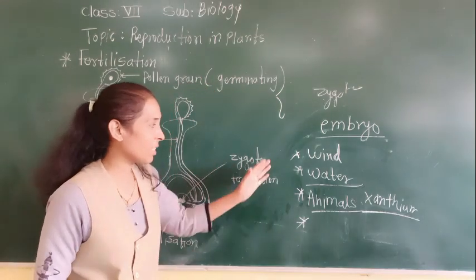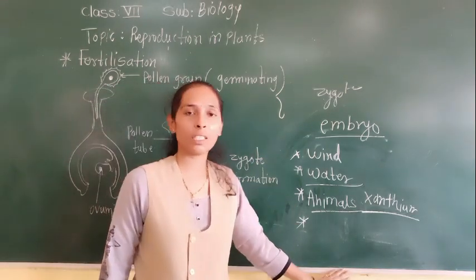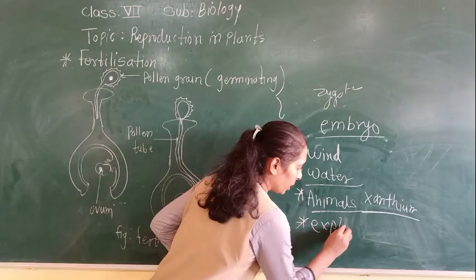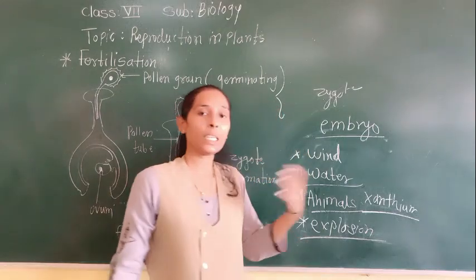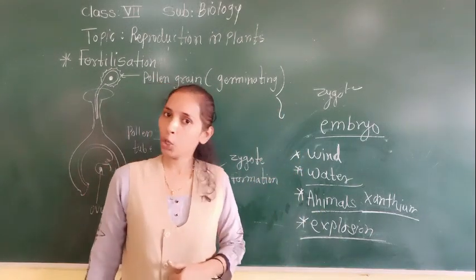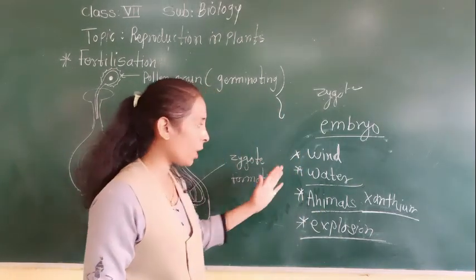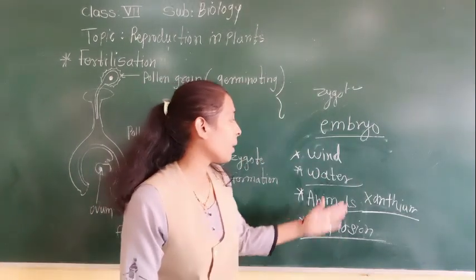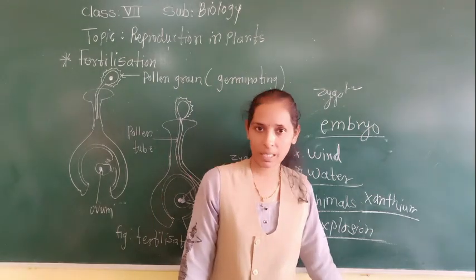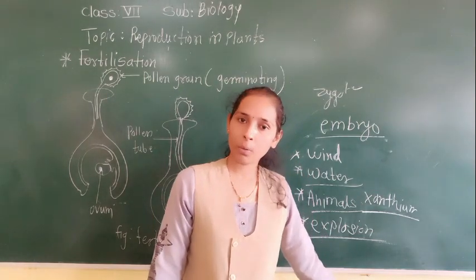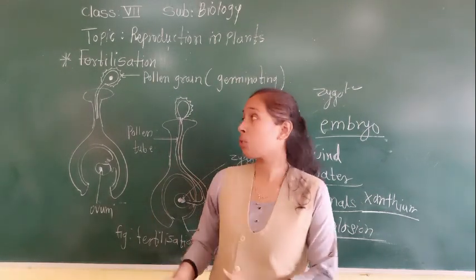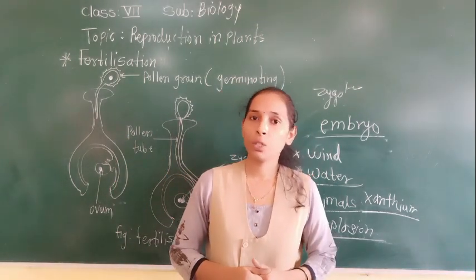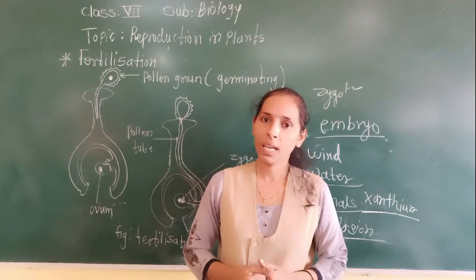So this is all about the certain ways for the dispersal of seeds — by wind, water, animals, and explosion. Today, we discussed fertilization and the dispersal of seeds. We have completed this lesson today, so we will stop here. We will meet in the next video with the next point. Thank you.